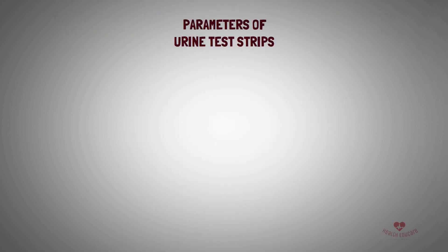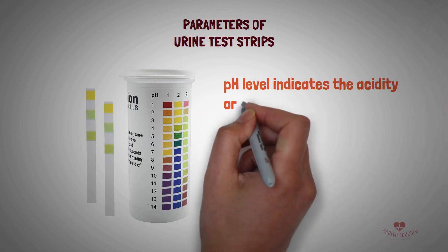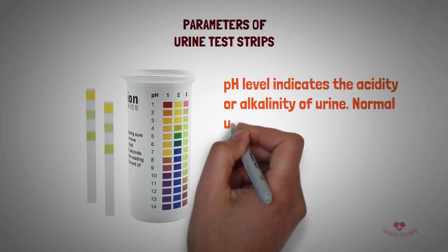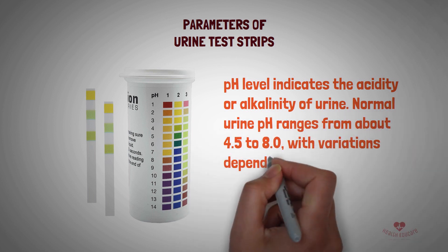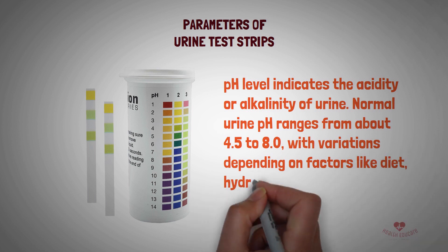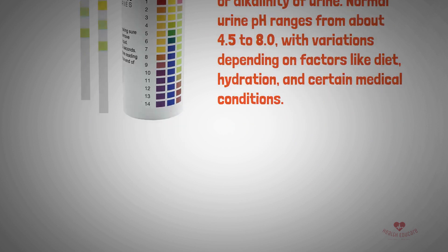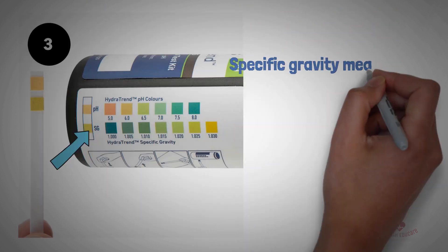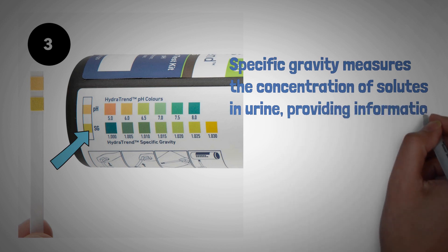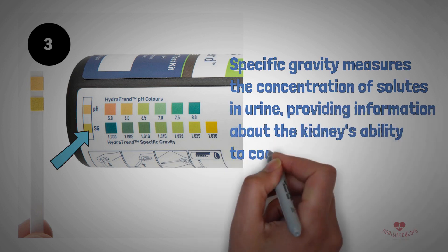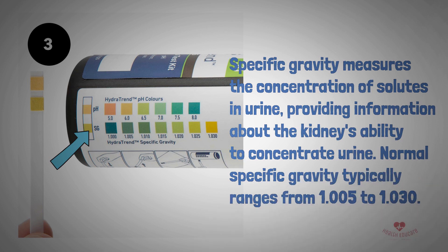Here is an overview of the common parameters measured by urine test strips. pH level indicates the acidity or alkalinity of urine. Normal urine pH ranges from about 4.5 to 8.0, with variations depending on factors like diet, hydration, and certain medical conditions. Specific gravity measures the concentration of solutes in urine, providing information about the kidney's ability to concentrate urine. Normal specific gravity typically ranges from 1.005 to 1.030.